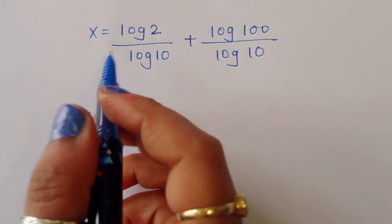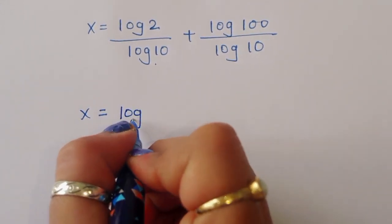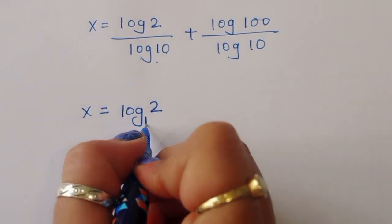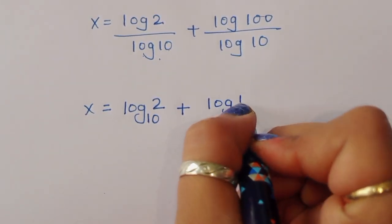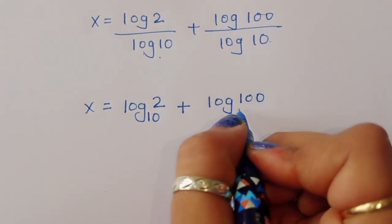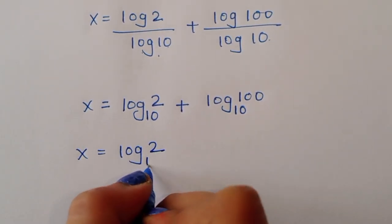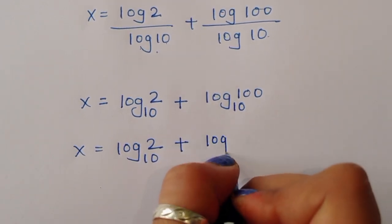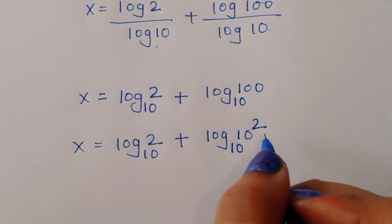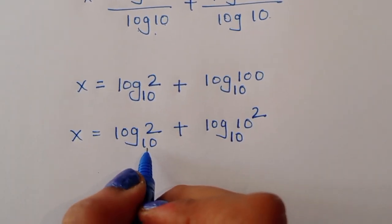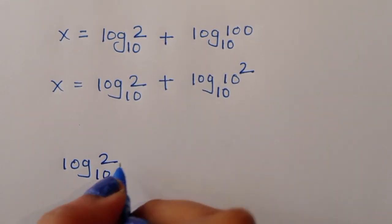We can write this as log of 2 to the base 10 plus log of 100 to the base 10. Now log of 100 to the base 10 can be written as log of 10 squared to the base 10. The value of log of 2 to the base 10 is approximately 0.3010.